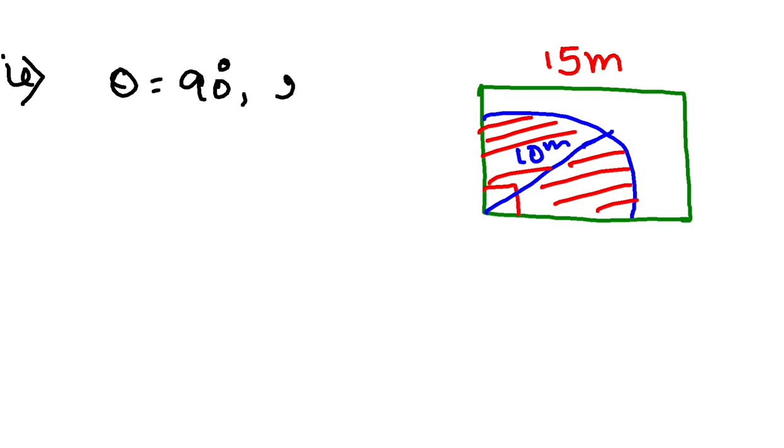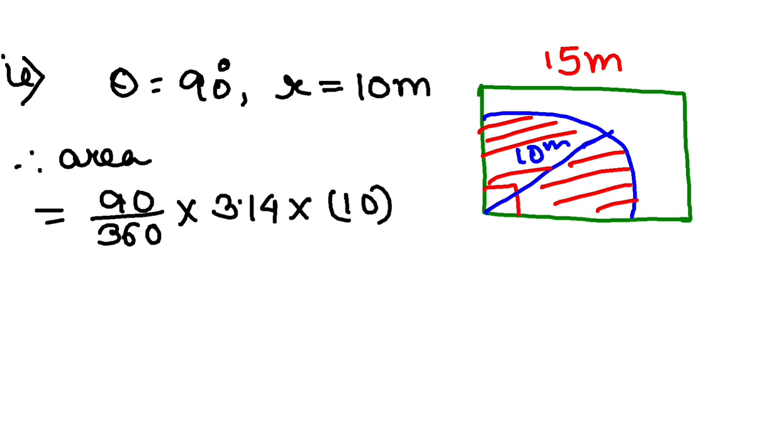So my area this time will be the same formula: 90 by 360 into pi, that is 3.14, into radius squared, that is 10 squared. If you calculate this, you will get 78.5 meter square. This is the area when the length is 10 meters.